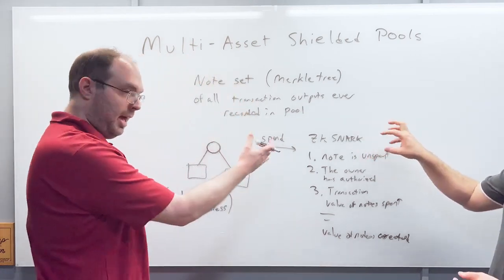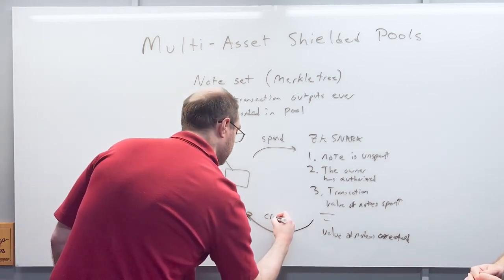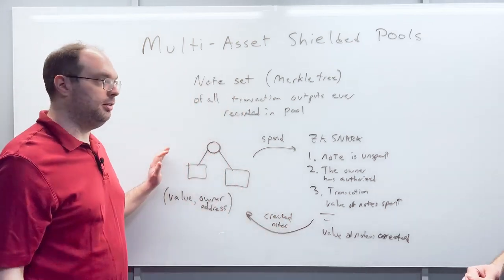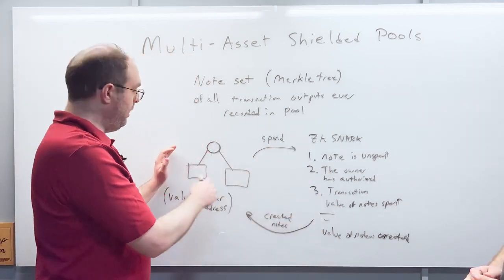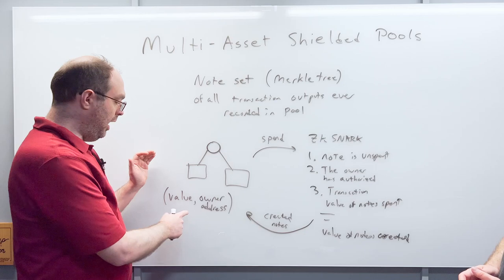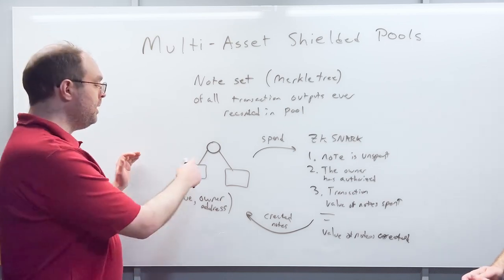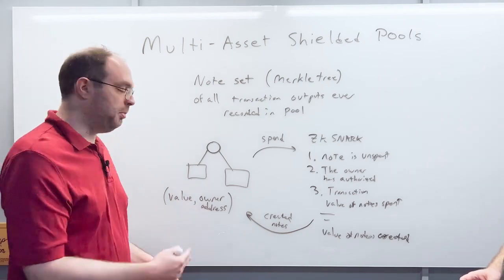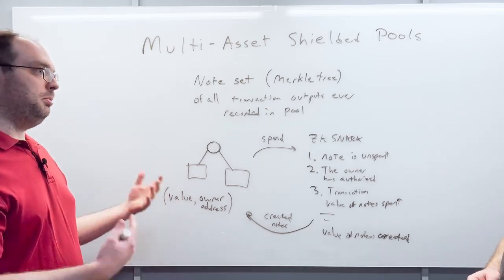The newly created notes are added back into the Merkle tree of the note set. As more transactions occur, the note set grows larger. Because each note in the note set is actually a commitment — it contains an encrypted value and owner address — it doesn't reveal any public information about those values. As the note set grows, you get more and more privacy.